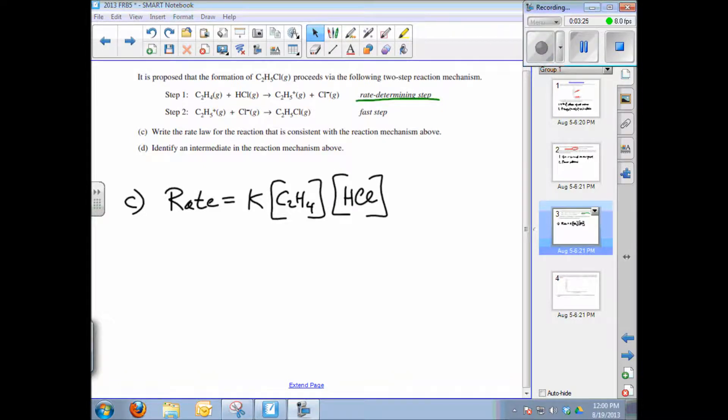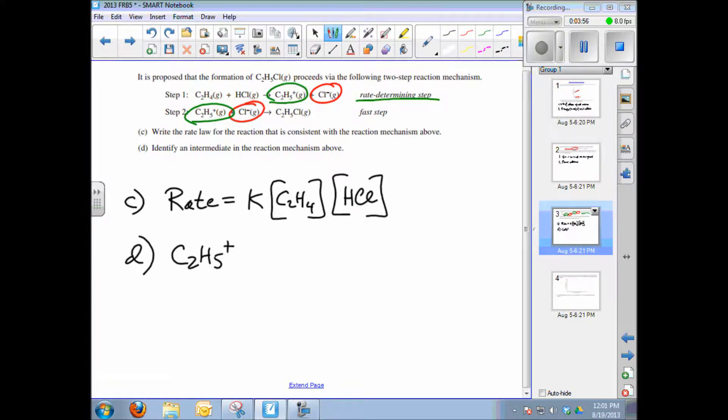Part D asks you to identify an intermediate in the reaction mechanism above. An intermediate is something that's produced in the first step that is consumed or a reactant in the second step. And there are actually two possible answers. The chloride ion is produced in the first step and is consumed in the second step. But same with this ion right here, the C2H5 plus is produced in the first and consumed in the second. So there's really two possible correct answers. It can be either the C2H5 plus ion or Cl minus, and they are both intermediates.